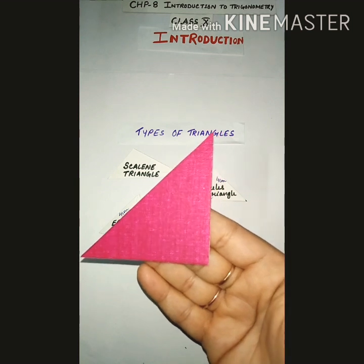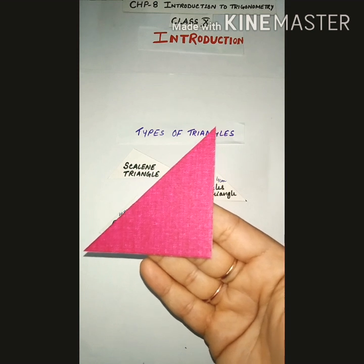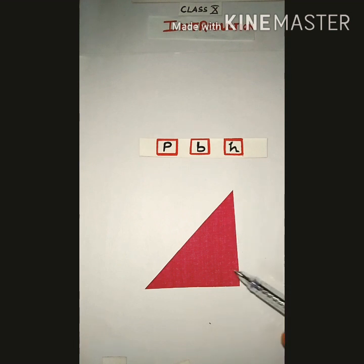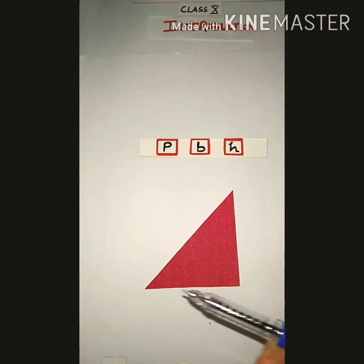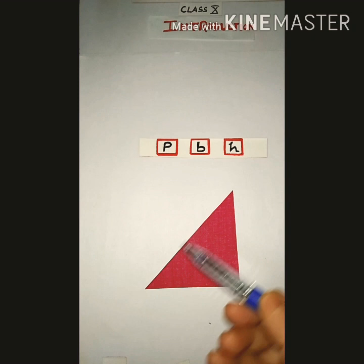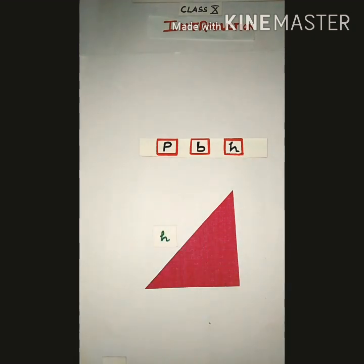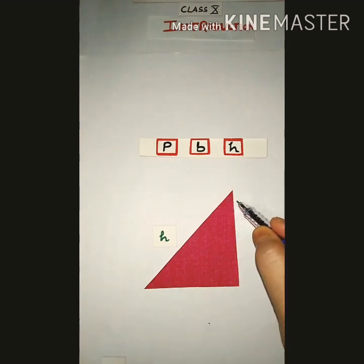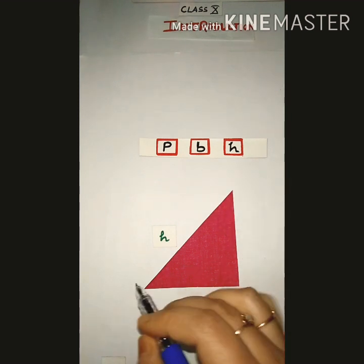We will restrict our discussion to acute angles only in this chapter. In a right angle triangle, one side is the perpendicular, another side is the base, and the third side is the hypotenuse — the longest side is obviously the hypotenuse. With respect to an acute angle, we will identify the perpendicular and the base.